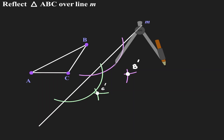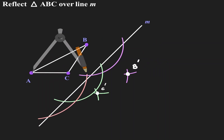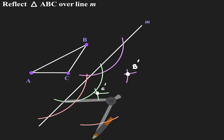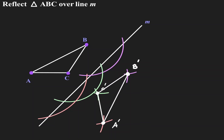Now let's repeat the process for point A. Now that we've found the image for every single point, let's connect those points. The triangle we've just created on the right-hand side can be seen as the image of the original triangle A, B, and C.